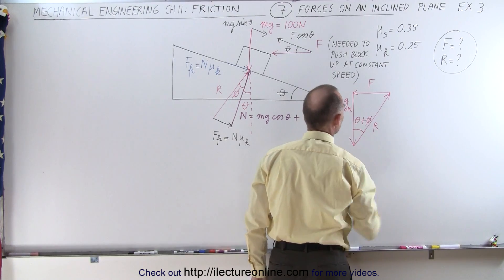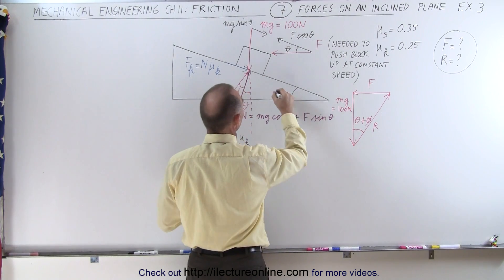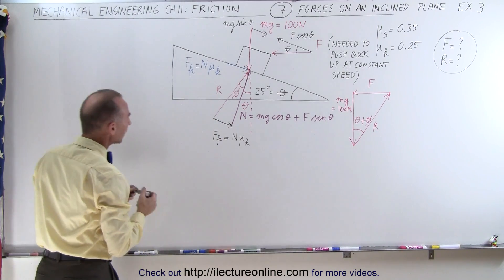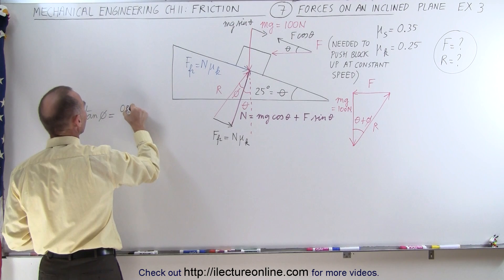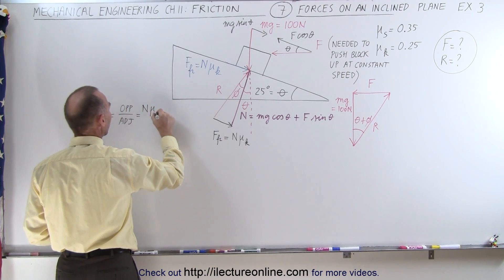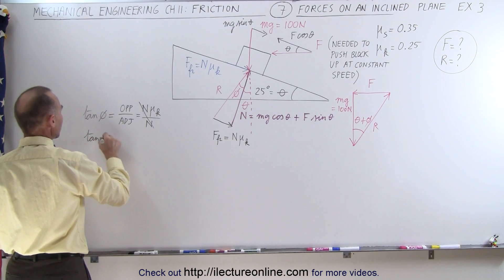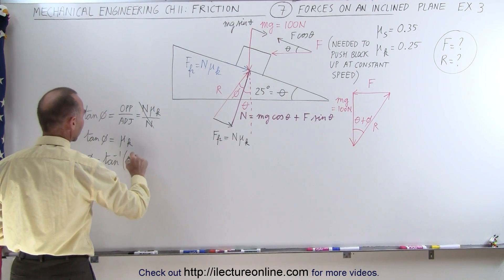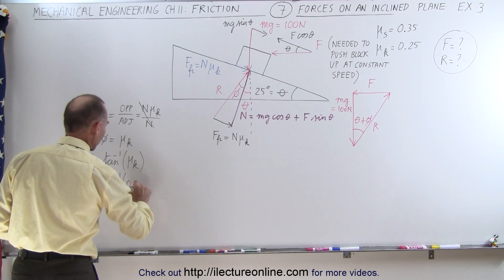That angle is theta plus phi. Assuming we know theta — let's say that's equal to 25 degrees — we need to find angle phi. We use this right triangle and the tangent of phi. The tangent of phi, by definition, is the ratio of the opposite side divided by the adjacent side. The opposite side is the friction force, which is the normal force times mu sub k, and the adjacent side is the normal force. The normal force cancels out, so the tangent of phi equals the kinetic coefficient of friction, and phi equals the inverse tangent of mu sub k.